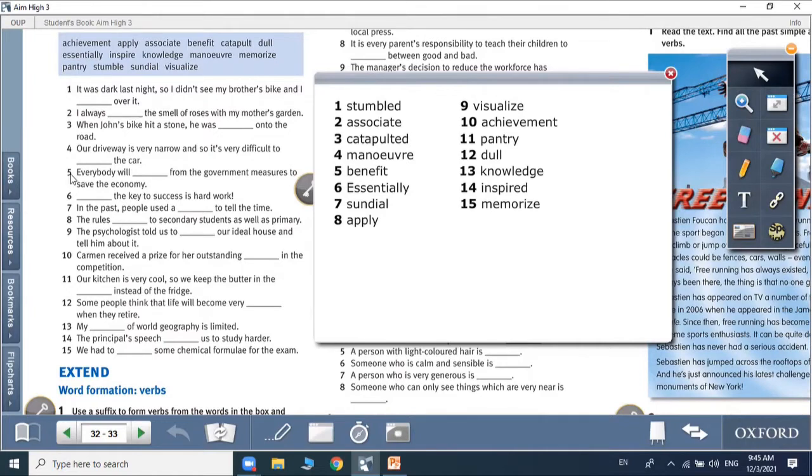Number five, everyone will benefit from the government measures to save the economy. Number six, essentially the key to success is hard work. Number seven, in the past people used sundials to tell the time. Number eight, the rules apply to secondary students as well as primary.